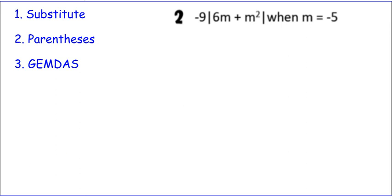Number 2, we have an absolute value. So anytime we see m, we're going to write negative 5 and put parentheses around it.